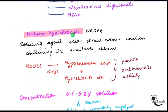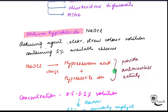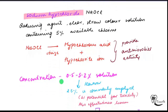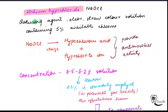Sodium hypochlorite, that is NaOCl, is a reducing agent. It is a clear straw-colored solution containing 5% available chlorine. It ionizes and produces hypochlorous acid and hypochlorite ions. These two provide antimicrobial activity.